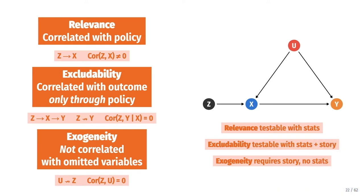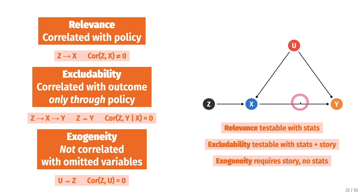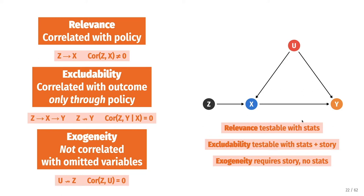The way you test these criteria can be tricky. Relevance — the idea that z and x are connected — is testable with statistics. You can run a model where x is explained by z and see how large the effect is and how large the F-statistic is, which measures the explanatory power of that model. You can do this purely with stats and you should always do it. Excludability is trickier — the idea that z causes the outcome only because of the policy. You can kind of test it with statistics, draw a plot, run a model to see if z and y are connected.